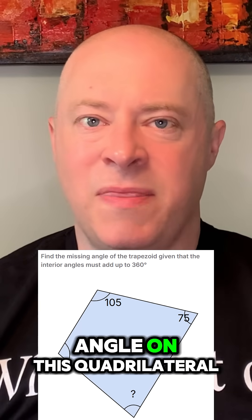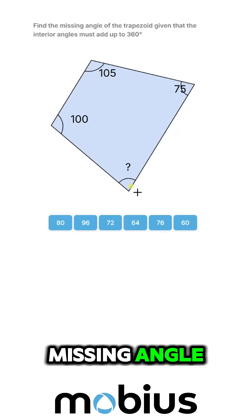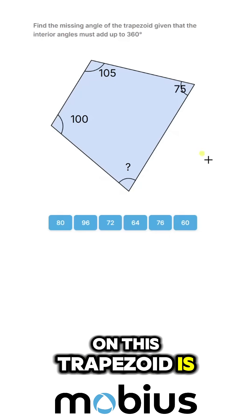Let's find the missing angle on this quadrilateral. Let's find out what our missing angle on this trapezoid is.